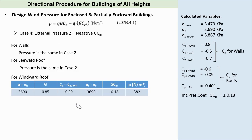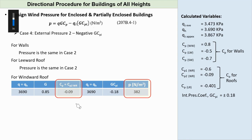Case 4, External Pressure 2 minus Negative GCPI. Wind pressures in walls and leeward roof are the same as in Case 2. But for the windward roof, we will use the second value of external pressure CP2, which is negative 0.09. By doing so, we get P for windward roof equals positive 382 pascals. Knowing all the surface pressures, we can draw the wind action for Case 4.